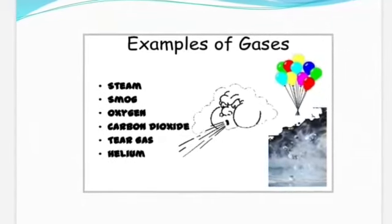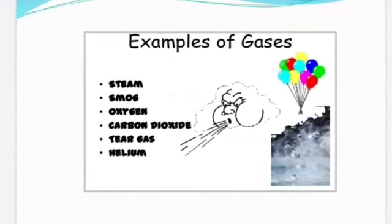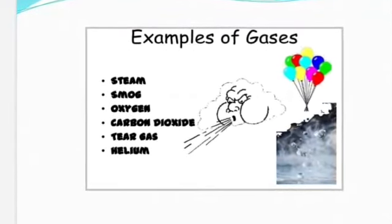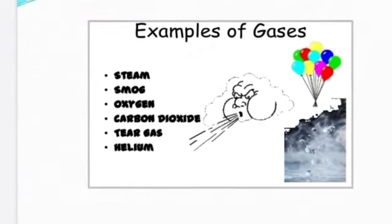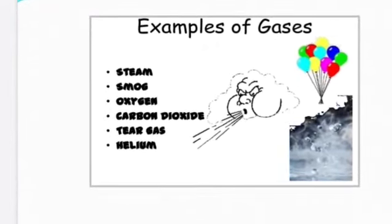Now, a few examples of gases: carbon dioxide, helium, steam, smog, oxygen, etc. Have you ever seen a beam of light entering a room? You will observe the dust particles moving in that beam of light. Movement of the dust particles signifies the movement of gas particles.